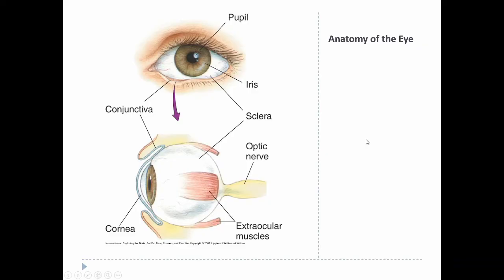The eye is the organ we use to detect light. From the outside, the main things you'll see are the pupil — the dark hole that light actually passes through — and the sclera, the white part of the eye. The sclera's main job is to provide structure, but its white color means it reflects all wavelengths of light, which prevents light from getting into the eye without going through the pupil.